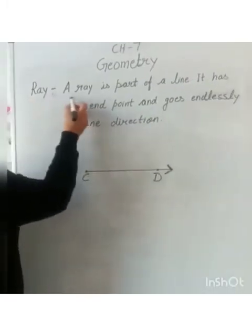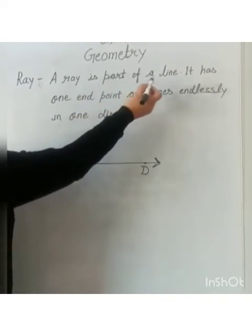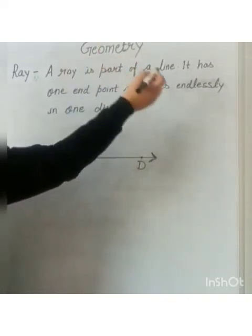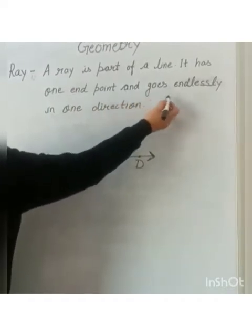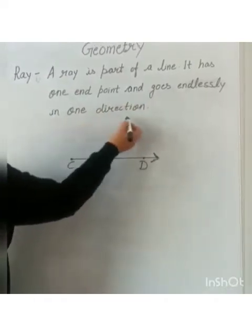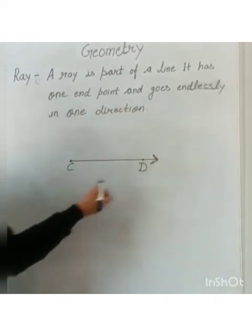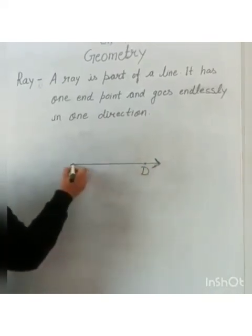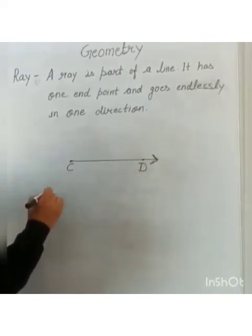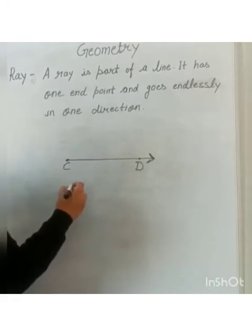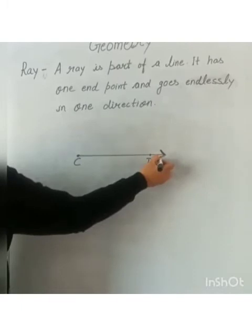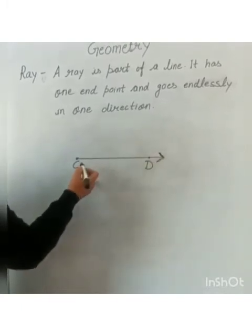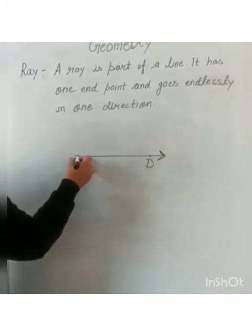Definition of ray is, a ray is part of a line. It has one end point and goes endlessly in one direction. So this is the ray. One side arrow and one end point is there. A ray is represented by an arrowhead on one side, one side arrowhead and point on the other side.